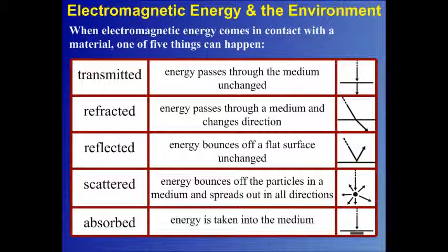The third thing that can happen is that the energy is reflected, which means that it bounces off of a flat surface and it's unchanged. The fourth thing is that the energy can be scattered, and that's when energy bounces off the particles in a medium and spreads out in all directions. This is similar to reflection, except instead of bouncing off of a flat surface, it's going in many different directions. And the last thing is that the energy can be absorbed, and that's when the energy is taken into the medium.